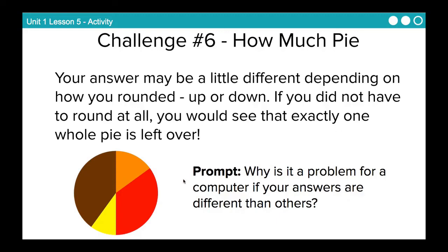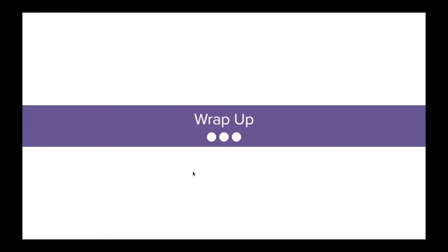So some food for thought here. Why is it a problem for a computer if your answers are different than others? Why might that be an issue? So think about that. Pause the video and come back. So an answer to this prompt is that computers rely on precision. You know, think of a calculator. We depend on 1 plus 1 always equaling 2. If sometimes it equaled 2 and sometimes it equaled 1.25, the calculator wouldn't be very useful. So rounding is necessary because we're limited in the number of bits that we have in any given system, but this is always going to lead to errors.